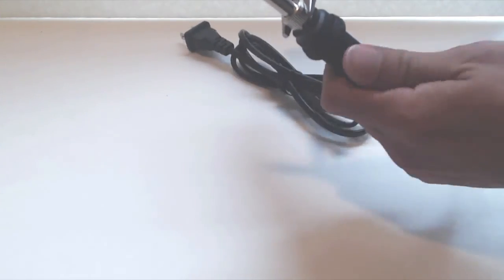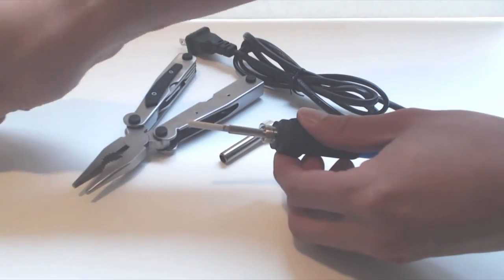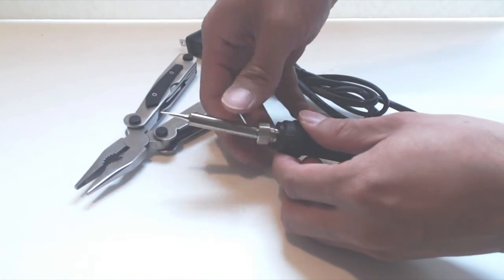To change the tips on the soldering iron, use some pliers to loosen the metal nut on the iron. Then remove the old tip and install the new tip before tightening the nut again.